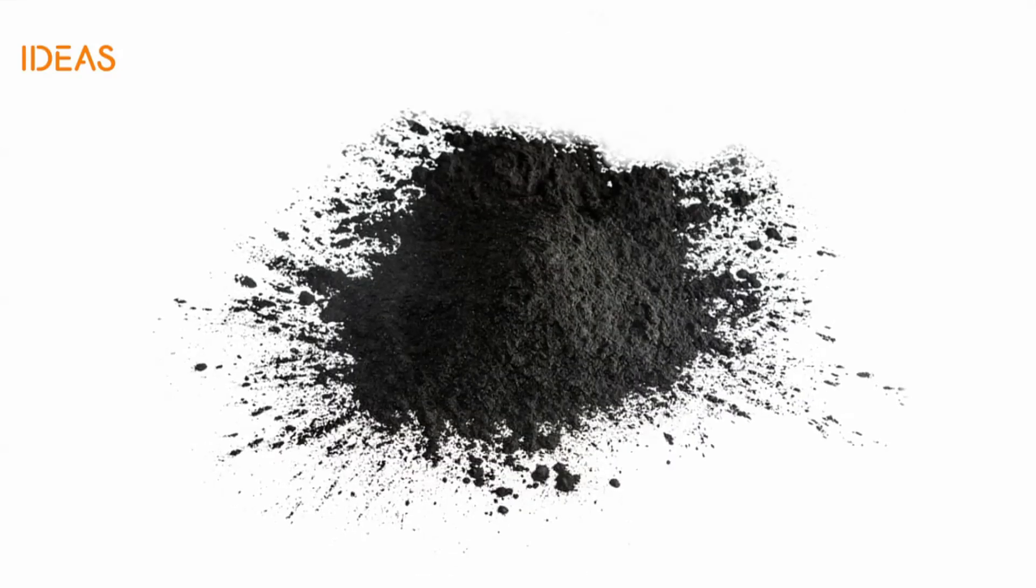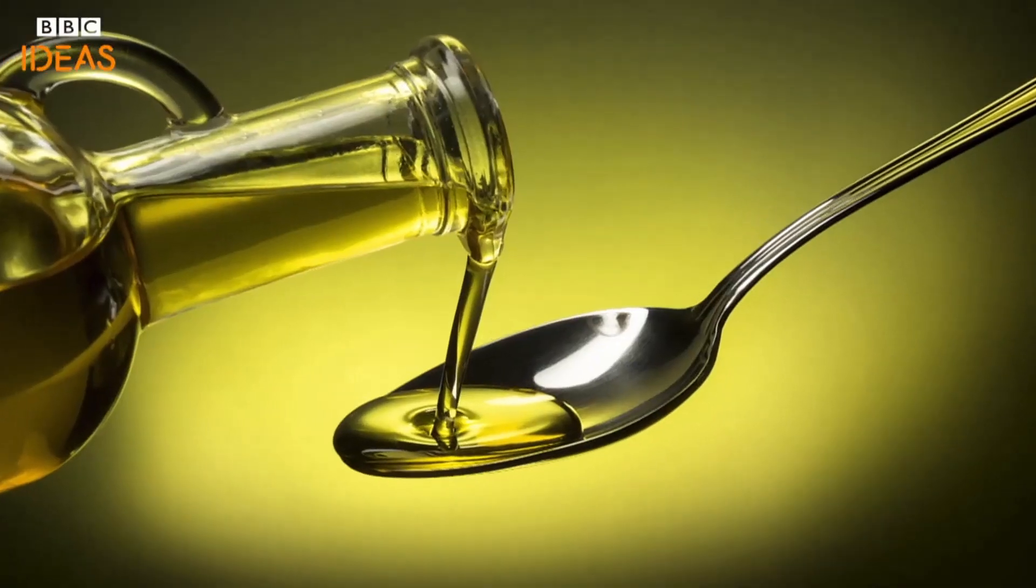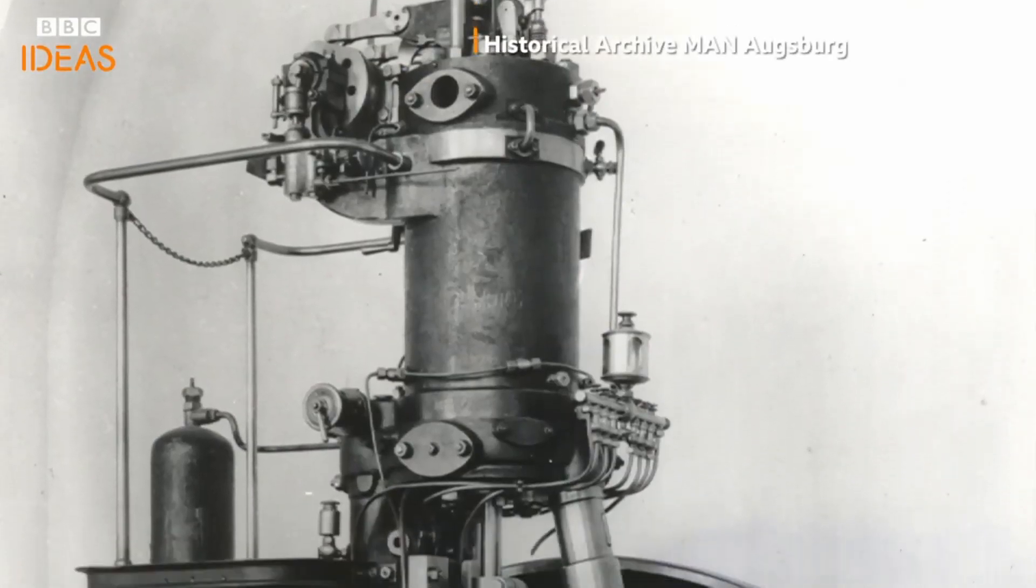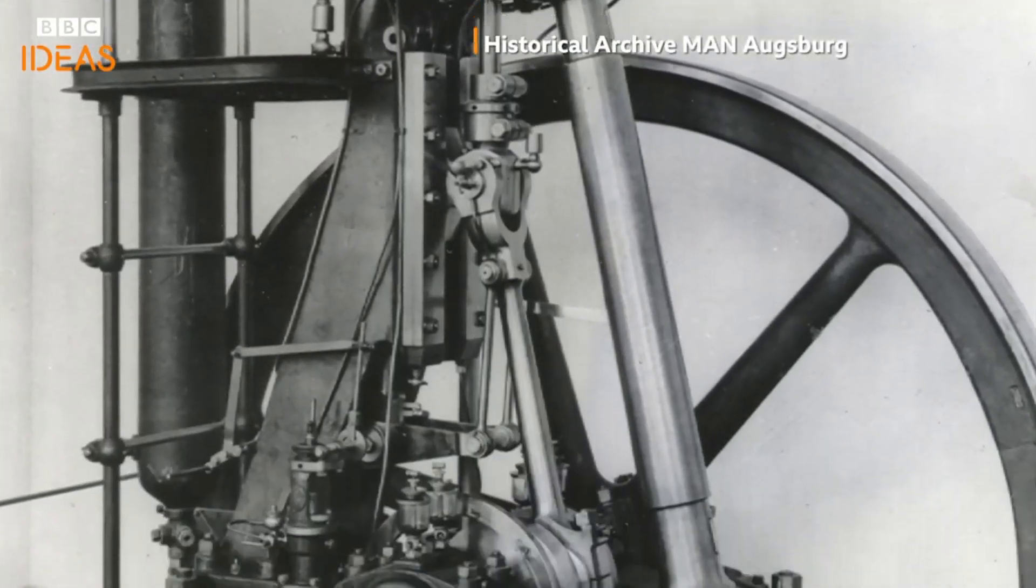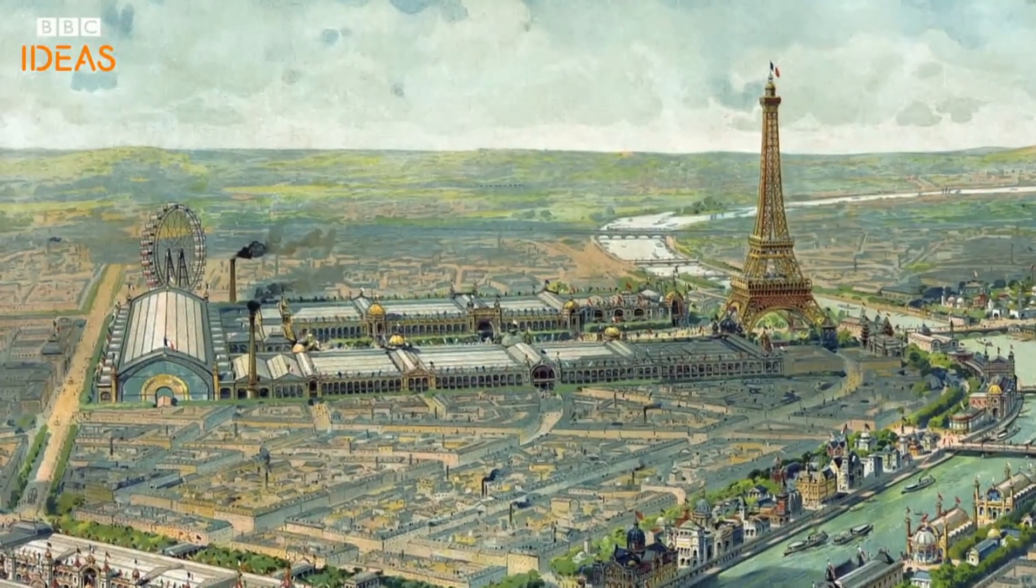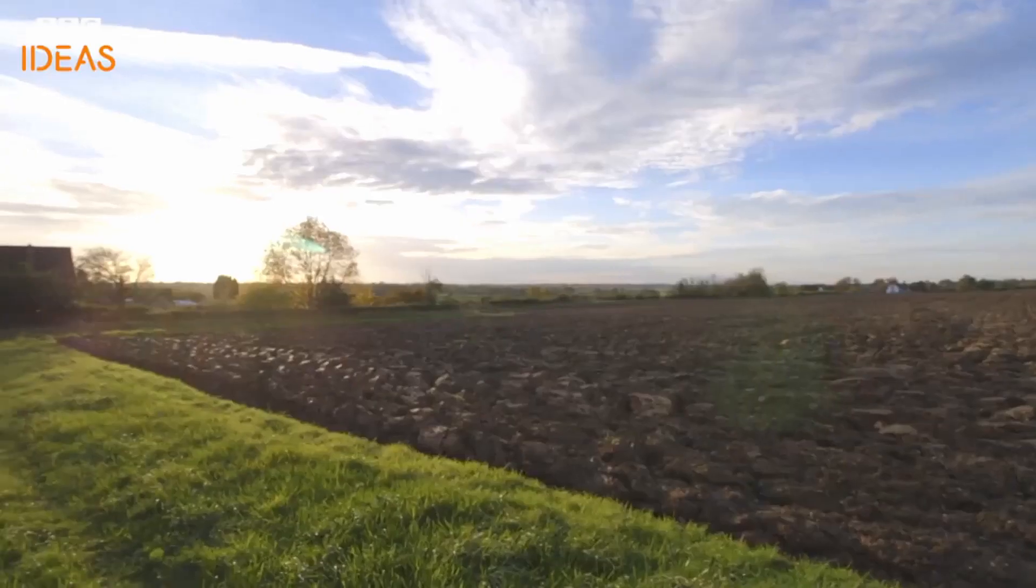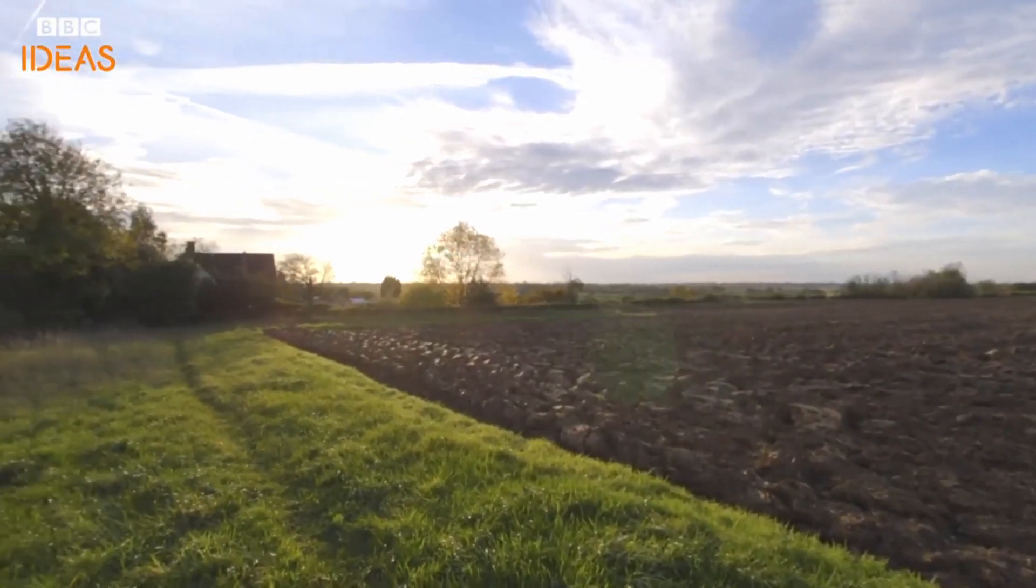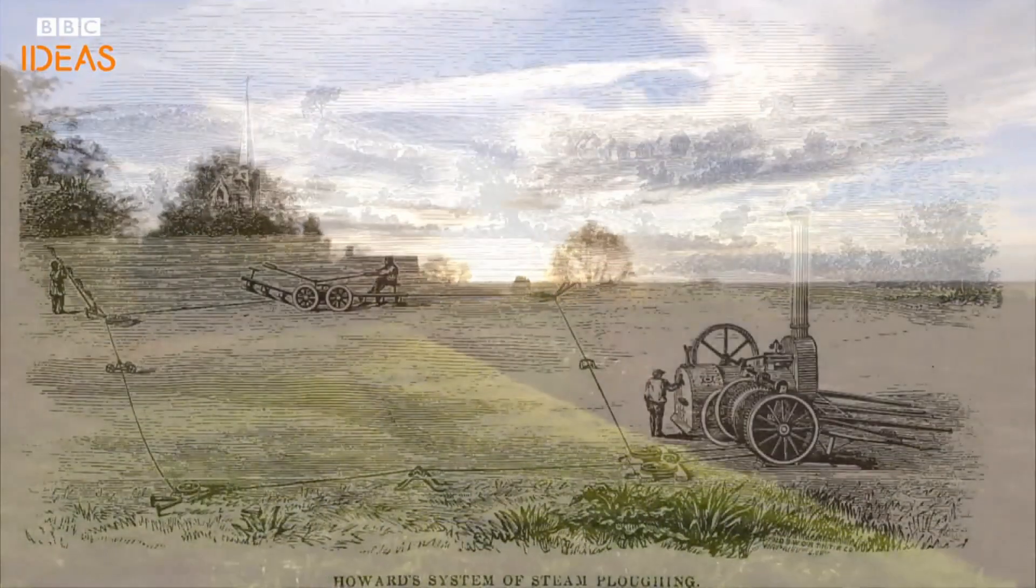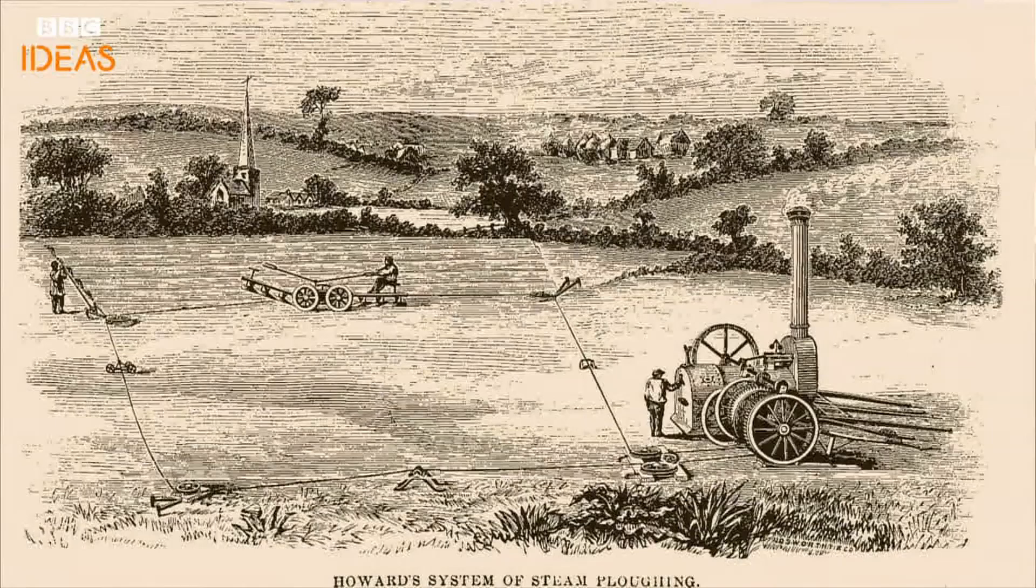It was invented to run on a variety of fuels, including coal dust and vegetable oils. One of his early devices was demonstrated at the 1900 World's Fair in Paris. It ran on peanut oil and won a Grand Prix. His invention was more eco-friendly and power efficient than alternatives at the time, and farmers could literally grow their own fuel.